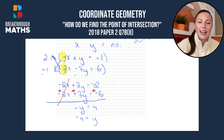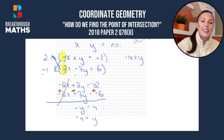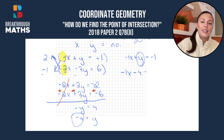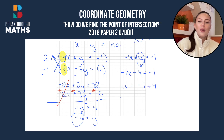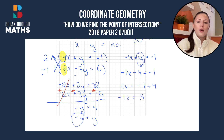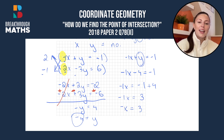Now we need to find x. We take the first equation: -1x + y = -1. We fill in y = -4, giving us -1x - 4 = -1. Keeping x on the left: -1x = -1 + 4, which is 3. Since -1x is the same as -x, we flip sides and get x = -3.